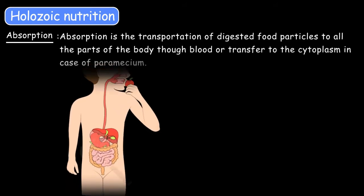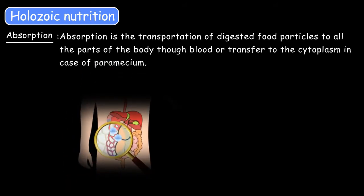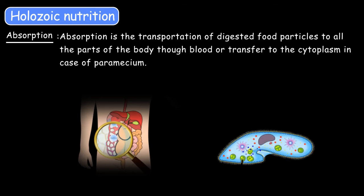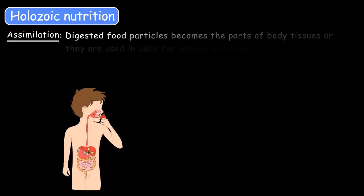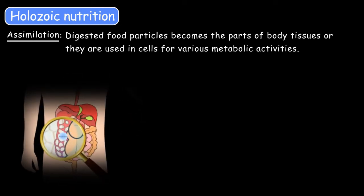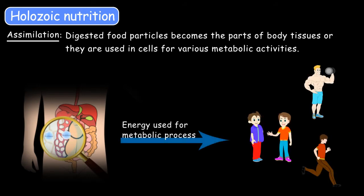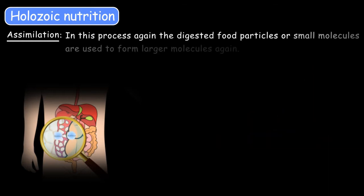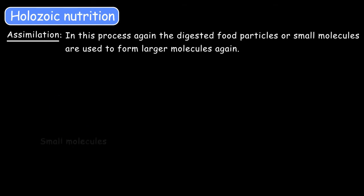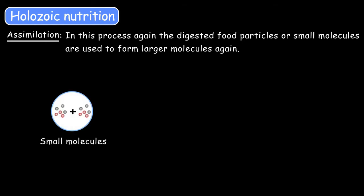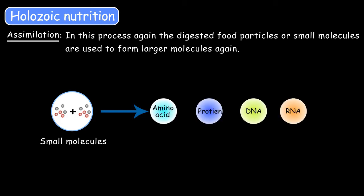The next step is absorption. Absorption is the transportation of digested food particles to all parts of the body through blood, or they are transferred to the cytoplasm in the case of a paramecium. Now, assimilation: the digested food particles become part of the body tissues, or they are used in the cells for various metabolic activities. In this process, the digested small molecules are used to form larger molecules again — for example, amino acids, proteins, DNA, and RNA are produced through assimilation.